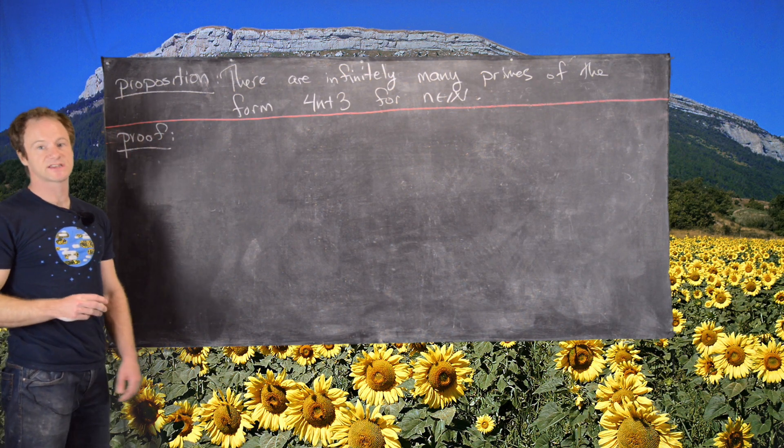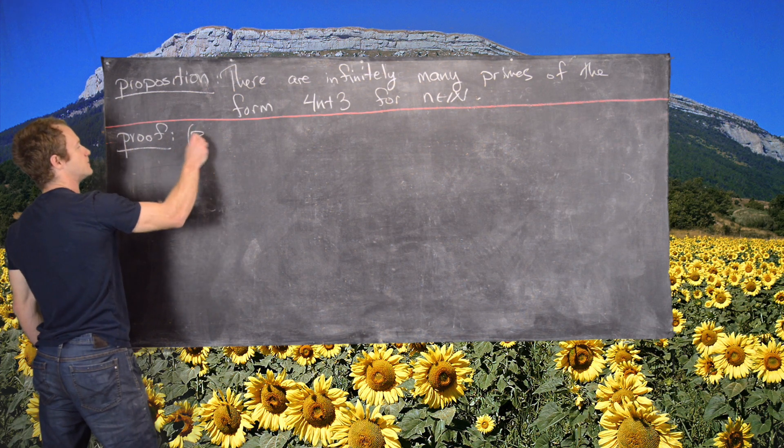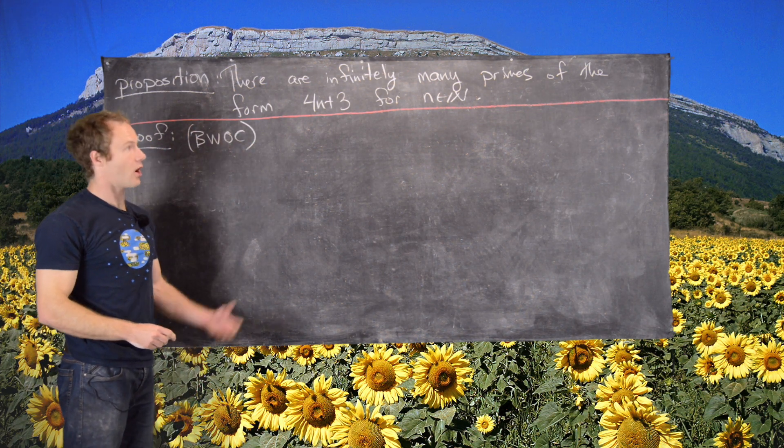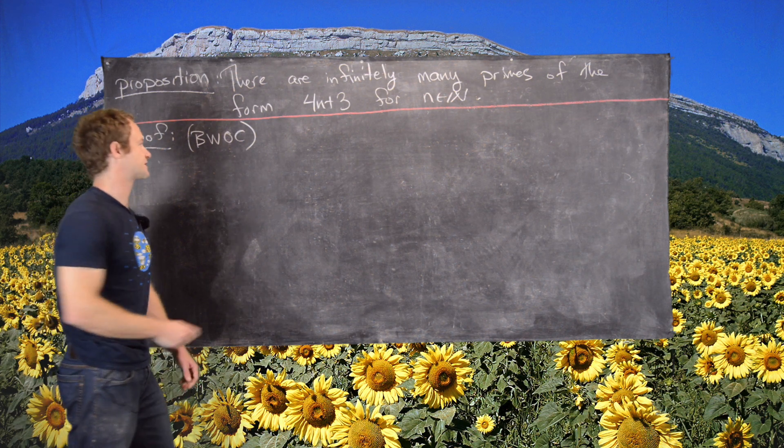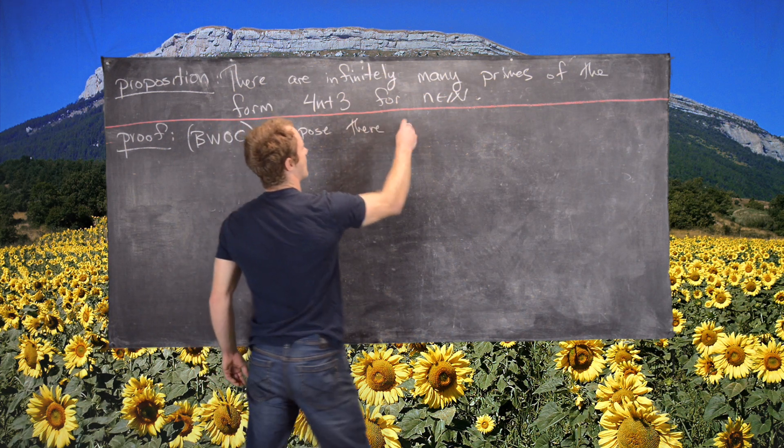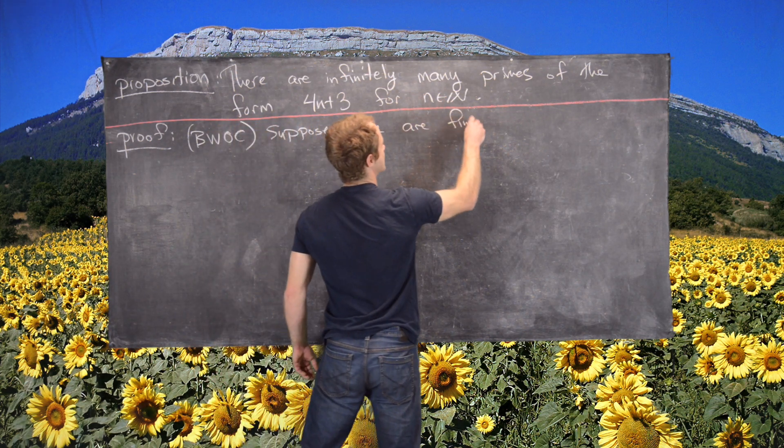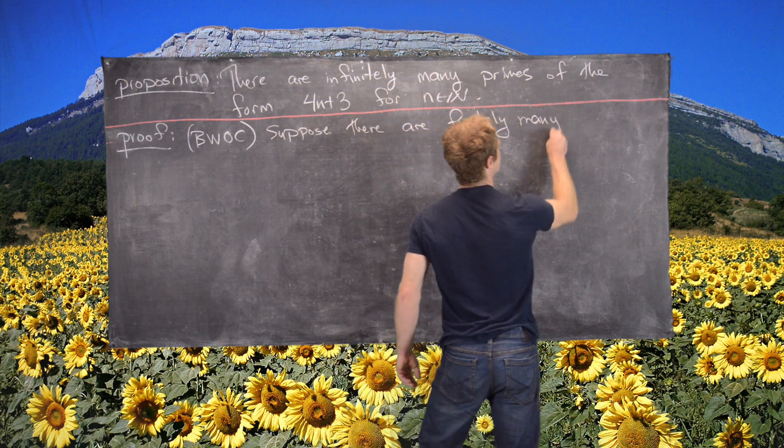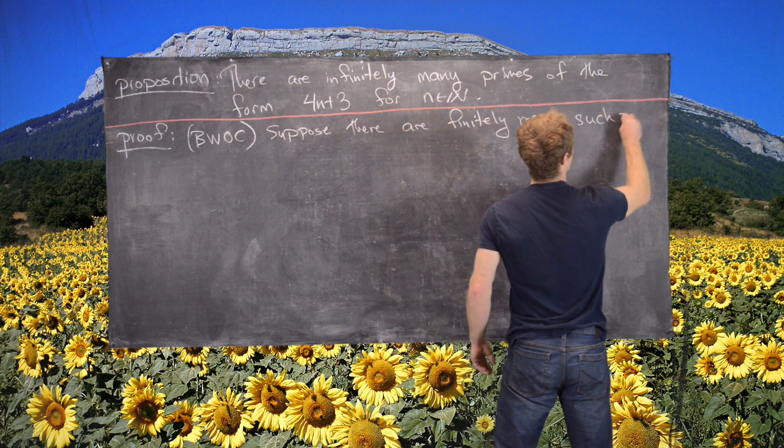We're going to do this by way of contradiction. So by way of contradiction, let's suppose that there are only finitely many primes of this form. Let's suppose there are finitely many such primes.